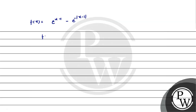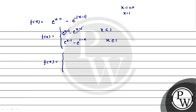So when x < 1, the mod opens with a negative sign, meaning negative becomes positive: f(x) = e^(x-1) - e^(x-1) — wait, it becomes e^(-(x-1)) - e^(x-1) with negative sign cancelling, giving e^(1-x). And when x ≥ 1, the mod opens with positive sign: f(x) = e^(x-1) - e^(-(x-1)) = e^(x-1) - e^(1-x).